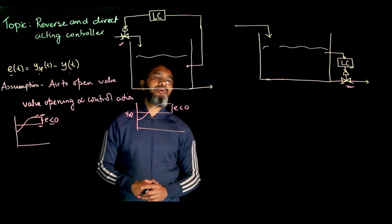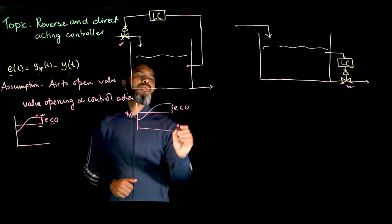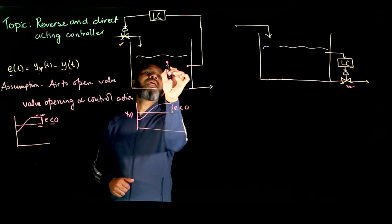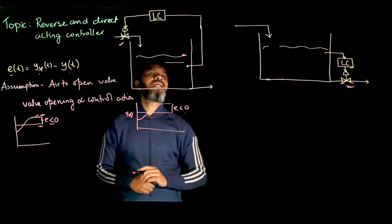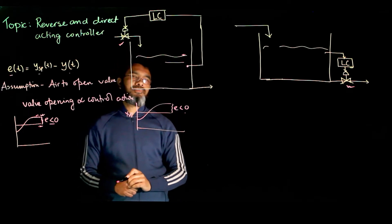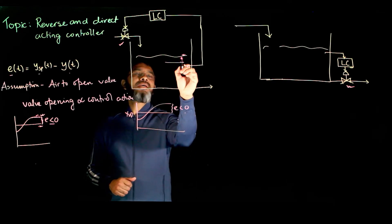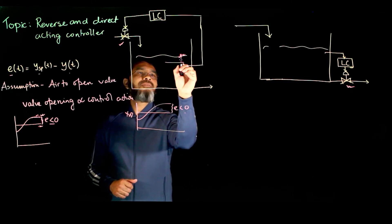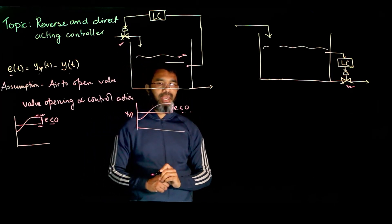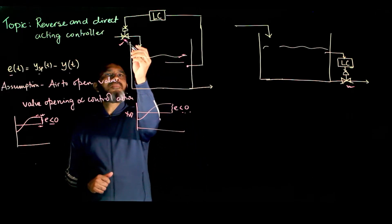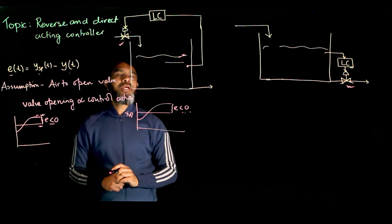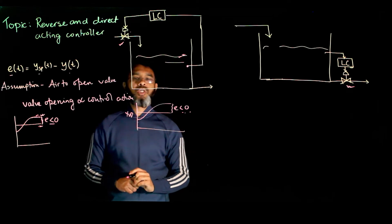More control action means more valve opening. When the error is negative — meaning the current value exceeds the desired value — you need to close this valve. Since more control action opens the valve, to close the valve you need to reduce the control action.